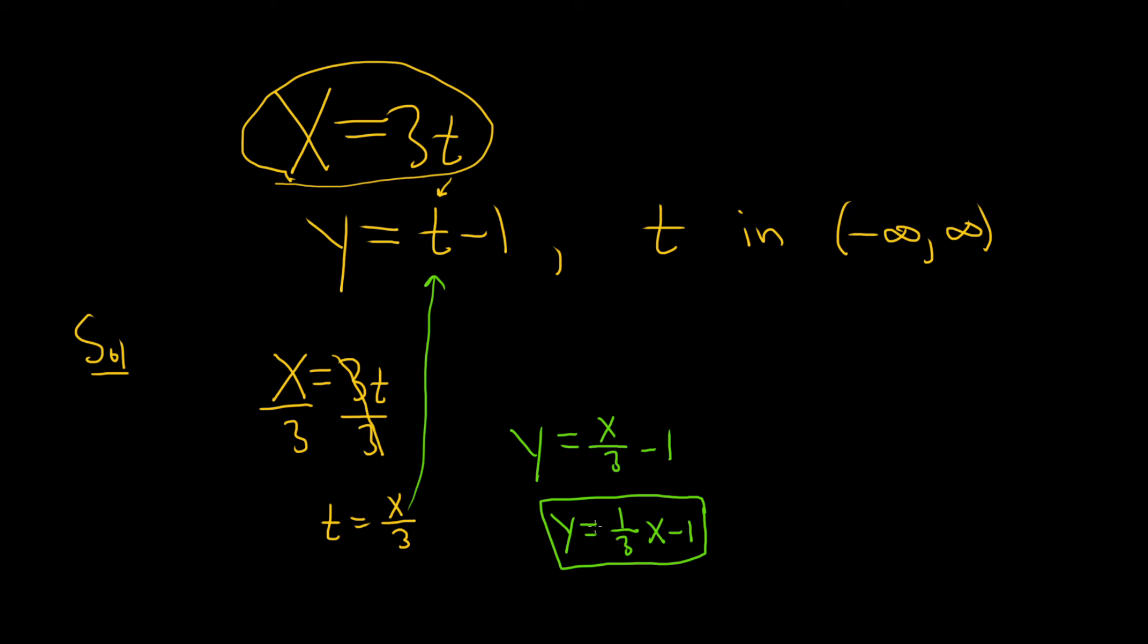The other part of the question wants us to state the appropriate interval for x or y. In other words, what are the possible values of x? Well, x is equal to 3t and t can be any number, so that means x can be any number.